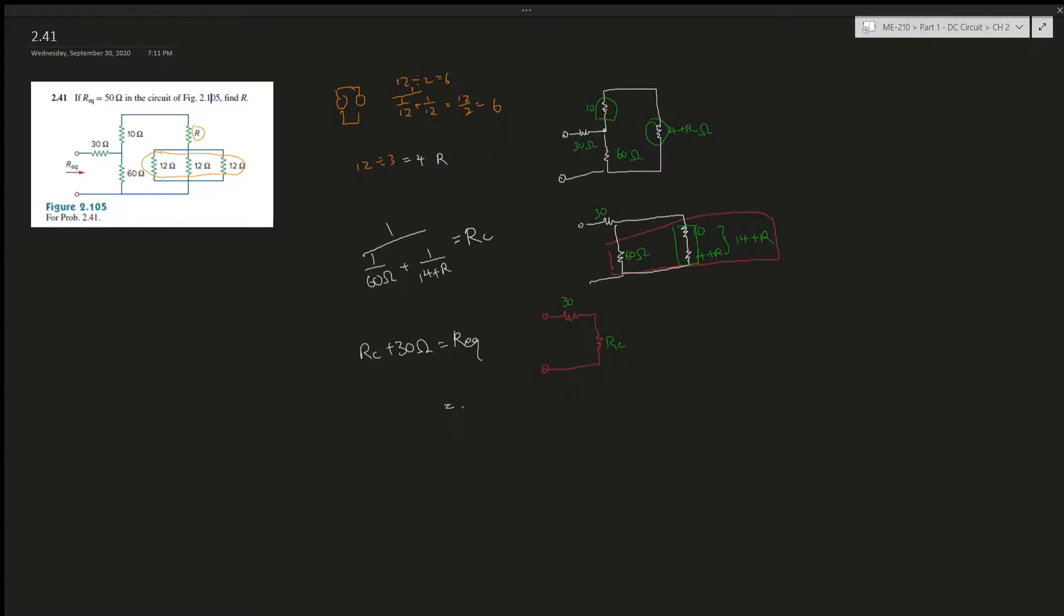So here is 30 and then here is the RC. And then from this, it's just a series. So RC plus 30 ohms is going to give us the R equivalent, which is already given as 50 ohms. So now we're just solving equations. We minus 30 both sides, and this is going to give us 20 ohms, which is RC.